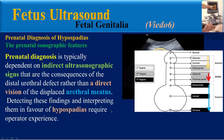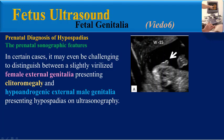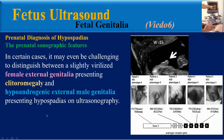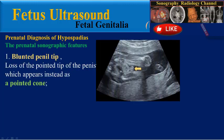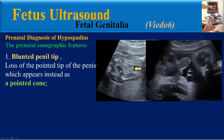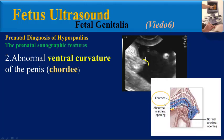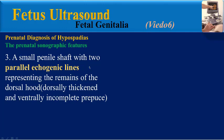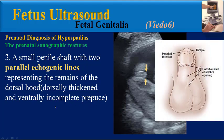Detecting these findings and interpreting them in favor of hypospadias requires operator experience. In certain cases, it might even be challenging to distinguish between a virilized female external genitalia presenting clitoromegaly and hypoandrogenic external male genitalia presenting hypospadias on ultrasonography. Therefore, prenatal misdiagnosis is quite common. One sonographic feature is a blunted penile tip — loss of the pointed tip of the penis, which appears as a pointed cone in a normal fetus.